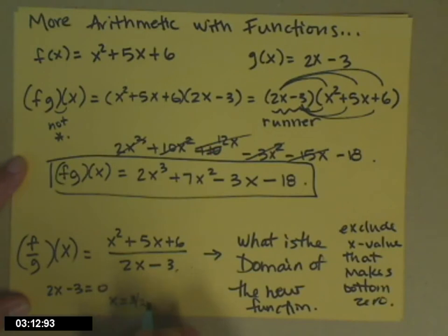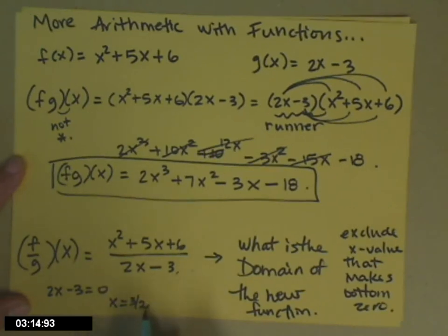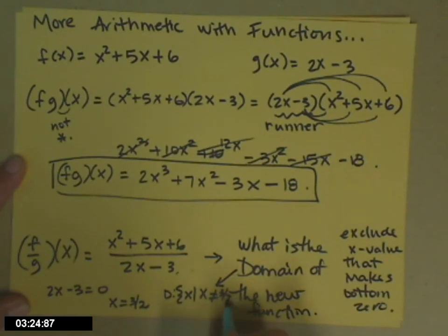So 2x minus 3 equals 0. The solution to that is x equals 3 halves. This is the x value that makes the denominator 0. So the domain is all x's such that x isn't 3 halves.